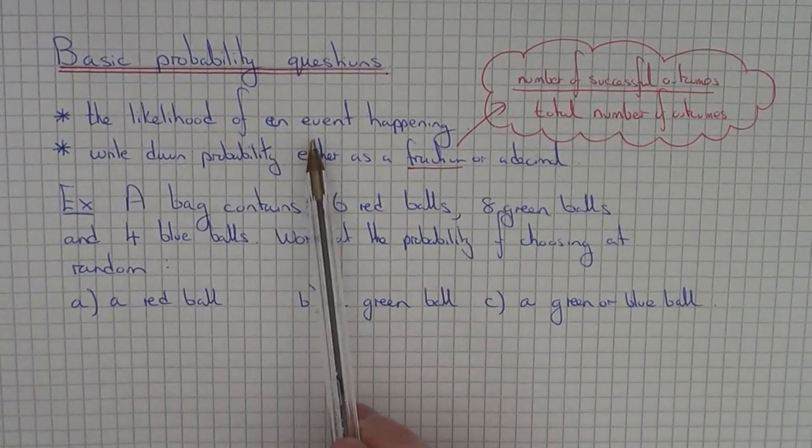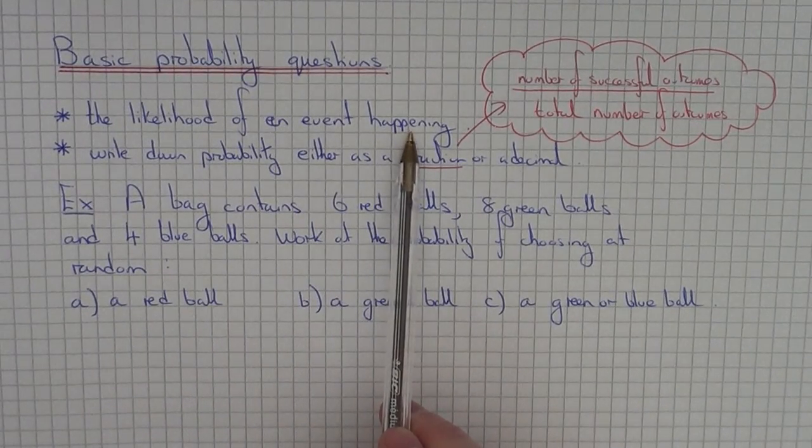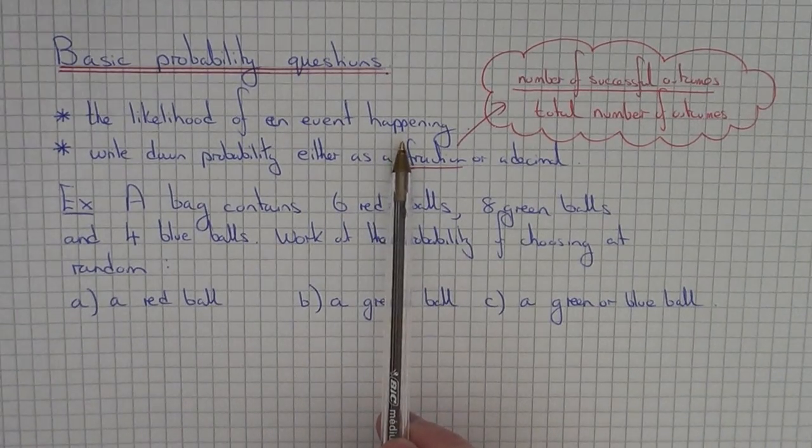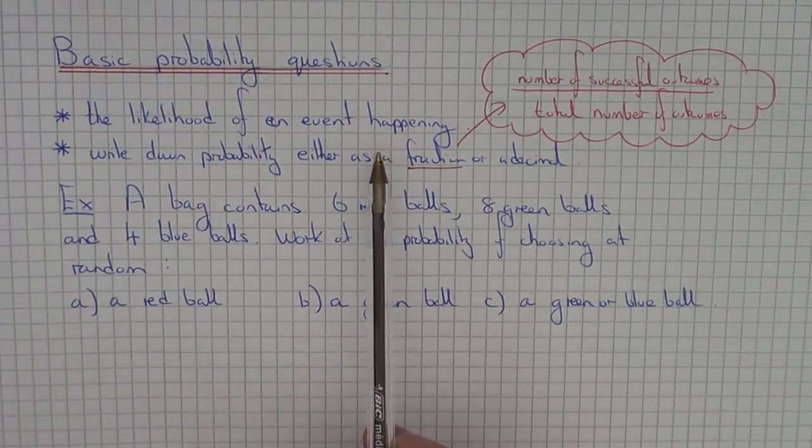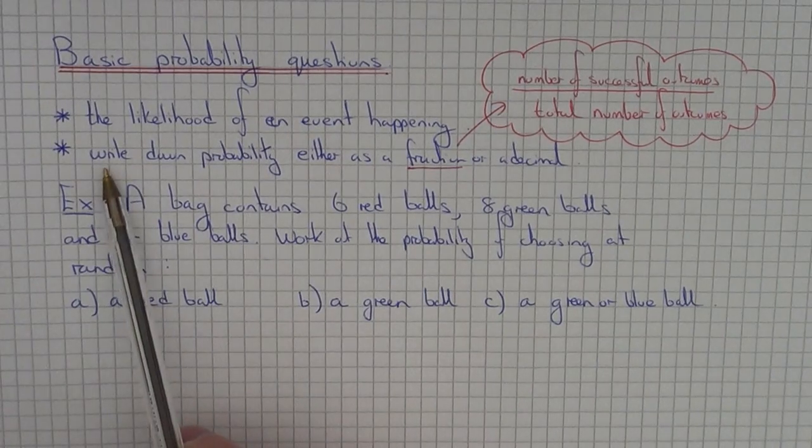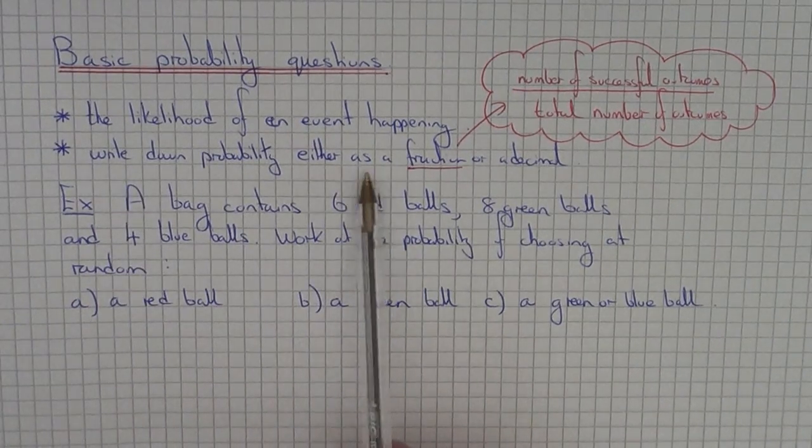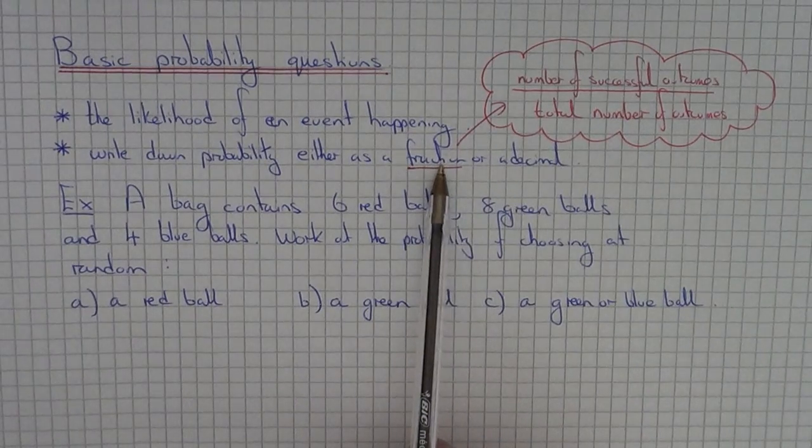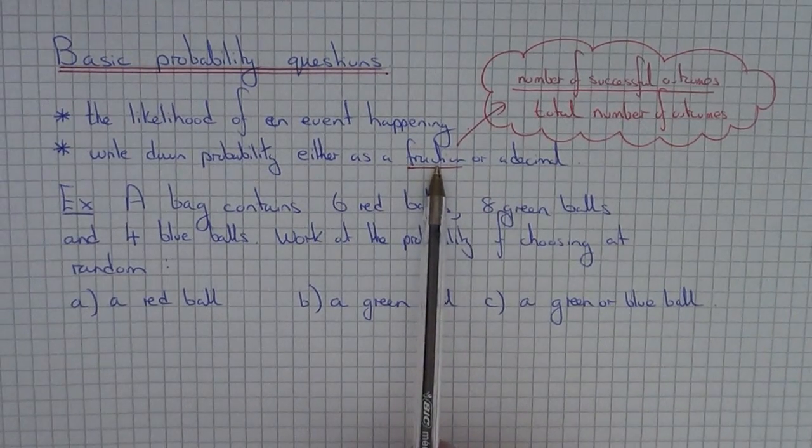Probability is the likelihood of an event happening. This could be something like spinning a 4 on a spinner or rolling a 3 on a dice. The best way to write it down is either by using a fraction or a decimal. The fraction is probably the easiest way of doing the probability.